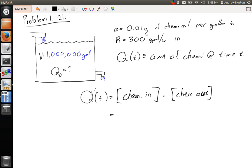So if we look at chemicals going into the equation, we have R amount going in. That's R amount of water going in. So we multiply that by alpha to get the amount of chemical coming in. So that's the amount of chemical coming into the tank.